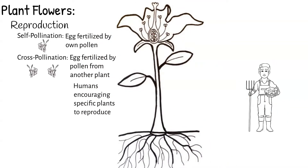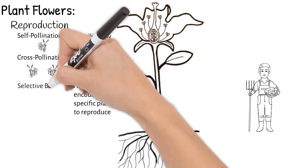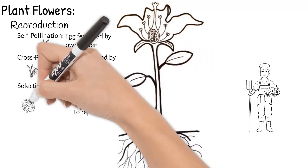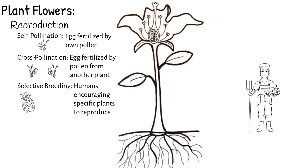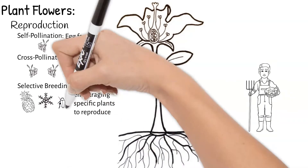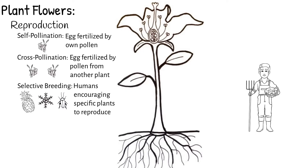When people get involved by choosing specific plants with special traits and encouraging these to reproduce, it is called selective breeding. Plants may be chosen because of their ability to produce a lot of flowers or fruit, or maybe because they are better able to withstand harsh conditions. Plants may also be selectively bred because they are more resistant to disease or pests.